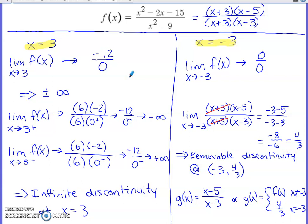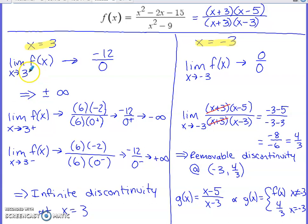If you're just evaluating limits by substitution, the first step is to put three in place of all the x's. Doing so gives negative 12 over zero, which is undefined — and a fraction is undefined here because it's infinite. This is a signal that we'll get infinity or negative infinity, but to confirm which, we need to do a one-sided analysis on each side of three.